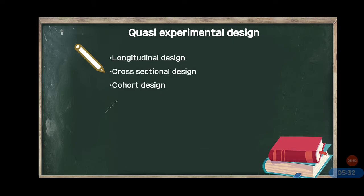So what do we do? We take two groups and compare them — taking the characteristic of cross-sectional by selecting different groups. We also study those groups over a length of time, taking the characteristic of longitudinal. So we took one or two groups and studied them in length — that is called cohort design. It is a mixture of longitudinal and cross-sectional, also called cross-sequential or cohort-sequential.